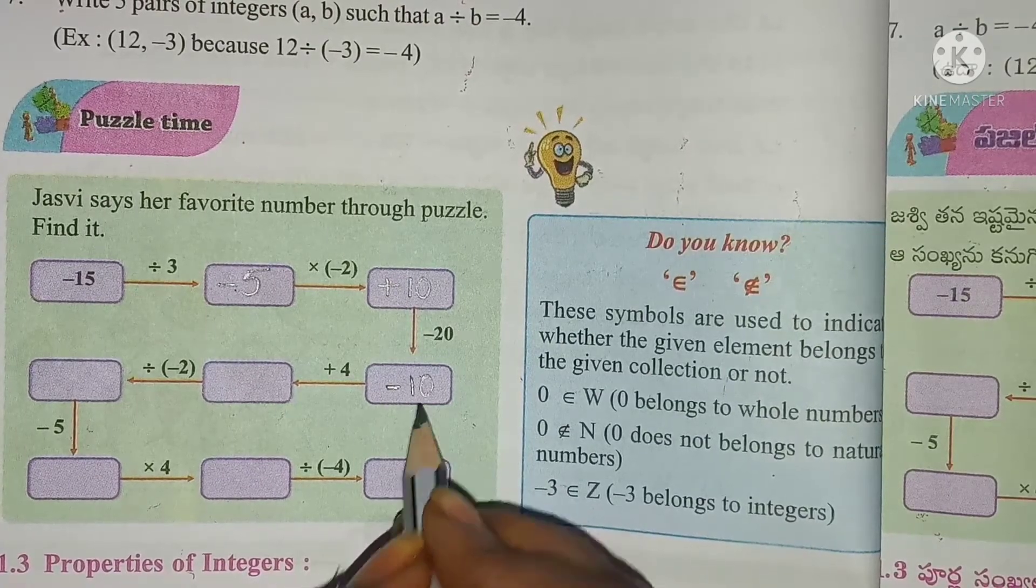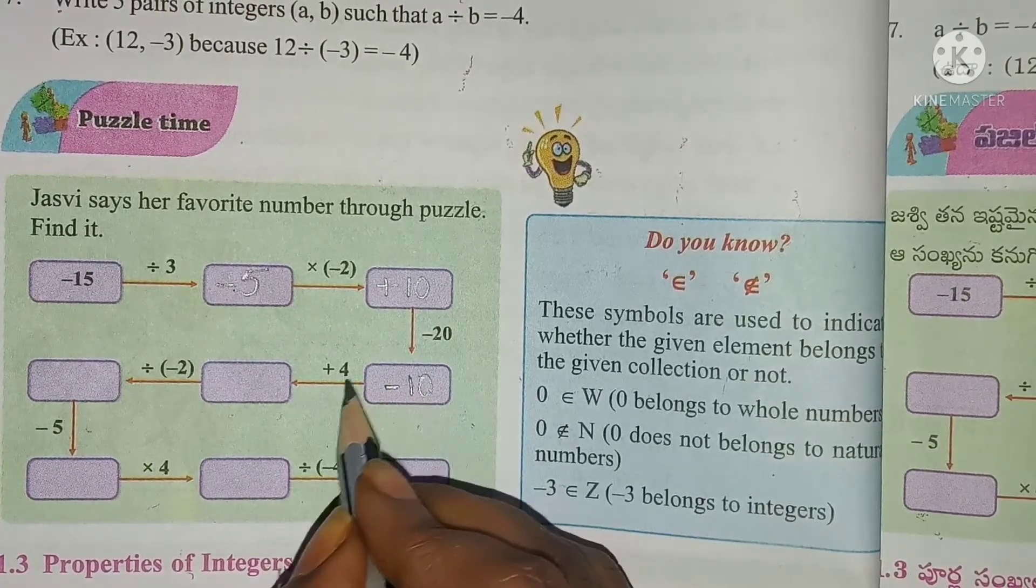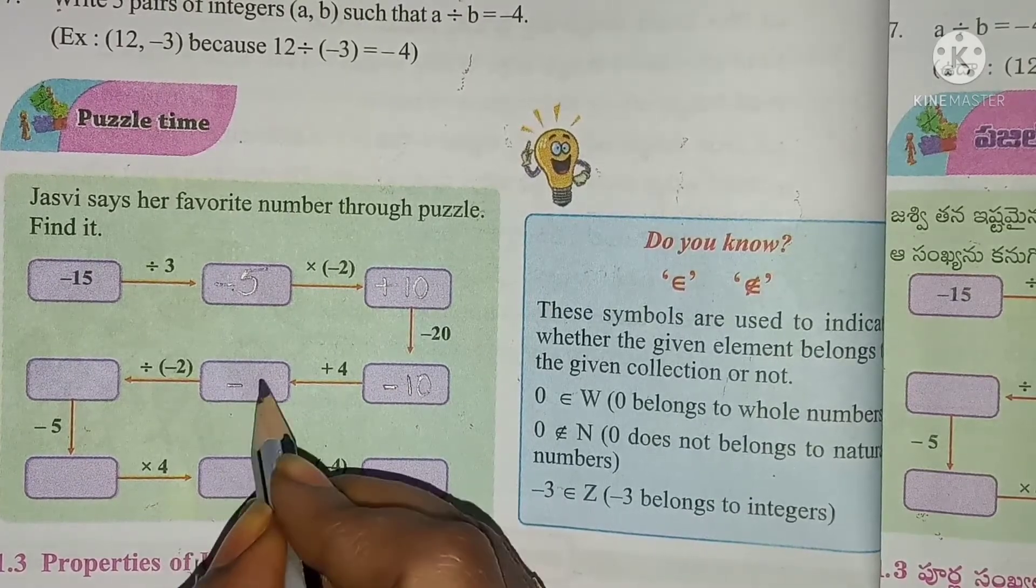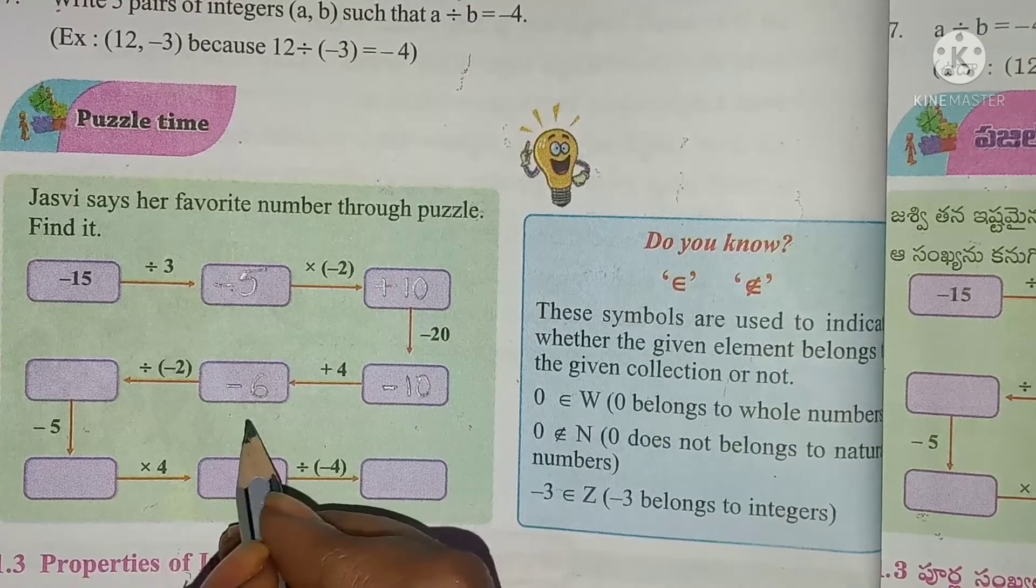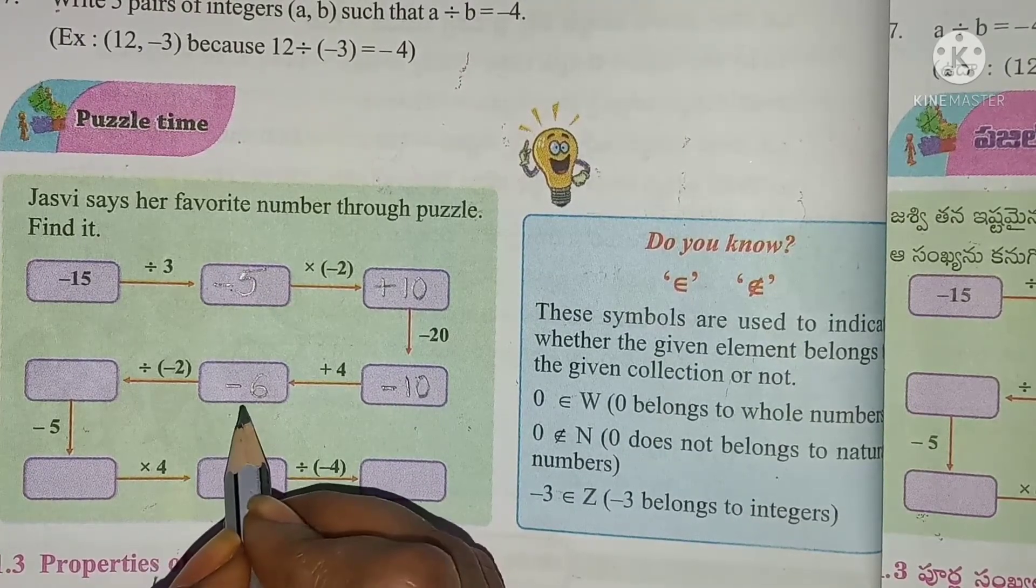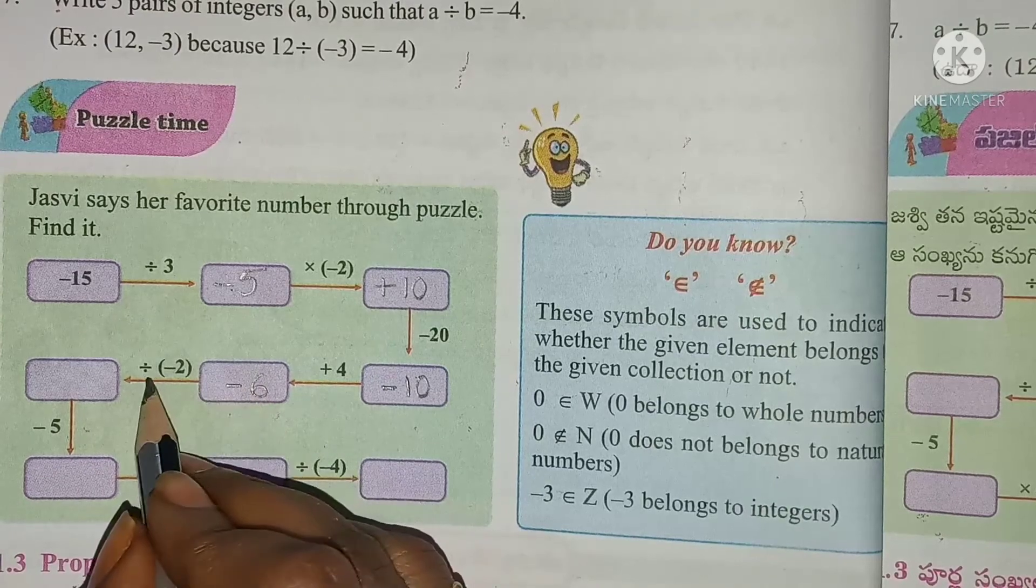Minus 10, to this minus 10 we have to add plus 4, which gives us minus 6.